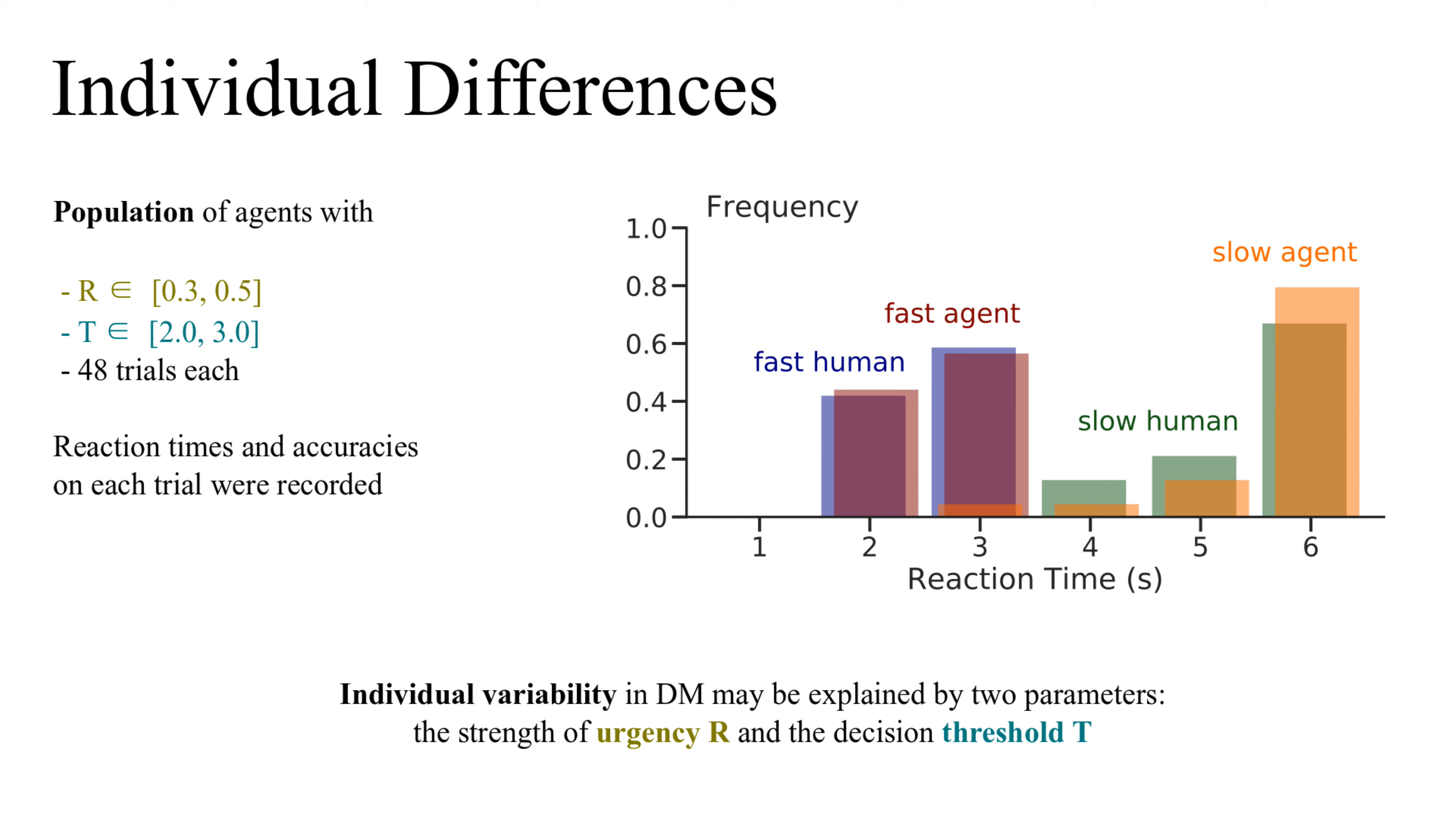Next, we looked at differences between individual model agents. We generated a population of agents with various urgencies and thresholds, then had each agent perform 48 trials. We recorded their reaction times and accuracies and compared the results with human data. What we found is that individual agents reproduced the behavior of individual participants from the study.